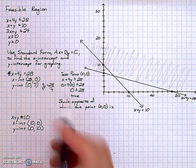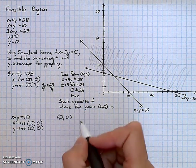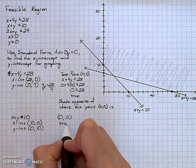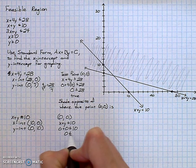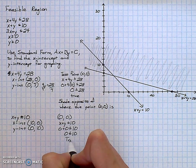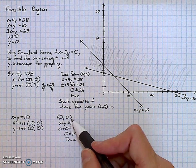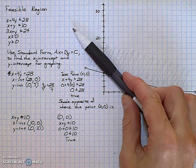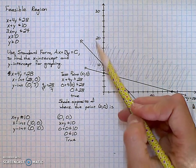For shading, I can use the same test point of 0, 0. I put it into the original inequality. I have 0 plus 0 is less than or equal to 10, which is true. So I do the opposite from 0, 0. 0, 0 is here in regards to my line. The opposite of shading this way would be shading above and to the right.